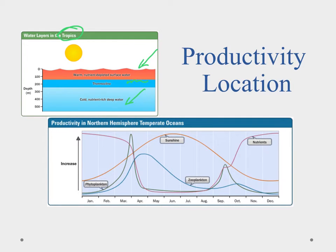Notice we have nutrient-rich water down below, but it's blocked by the thermocline from getting up to the surface. So we don't get a lot of productivity in the tropics because the nutrients have already been depleted. Even though there's a lot of sun, there aren't the nutrients that phytoplankton needs for photosynthesis to occur, so we don't see a lot of it happening there.